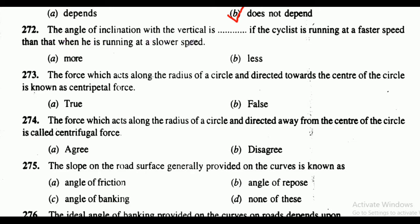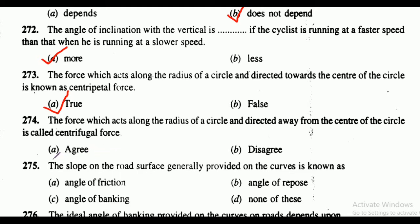Question 272: the angle of inclination with the vertical is — more or less — if the cyclist is running at a faster speed than when running at a slower speed? The correct answer is option A, that is more. Question 273: the force which acts along the radius of a circle and directed away from the center is known as centripetal force — true or false? It is true.